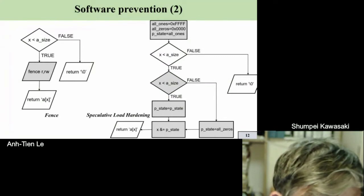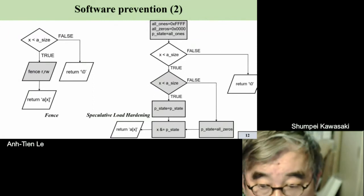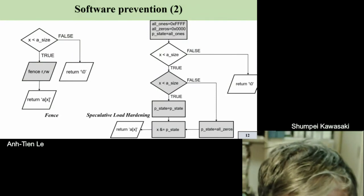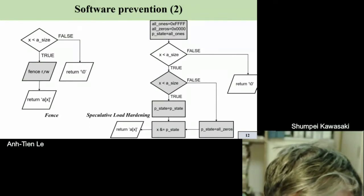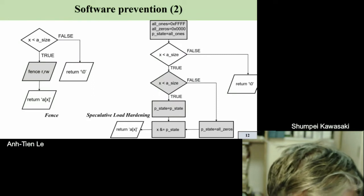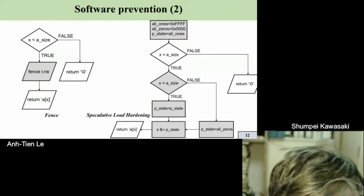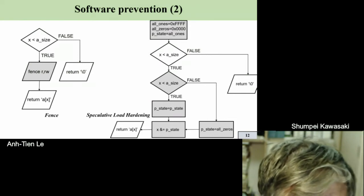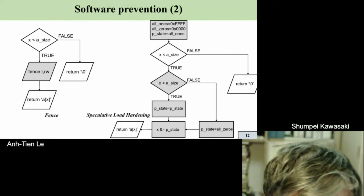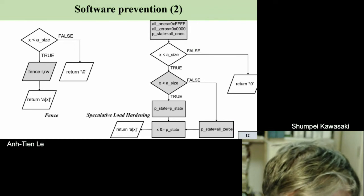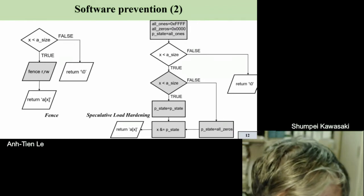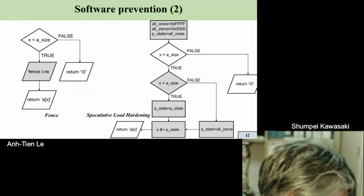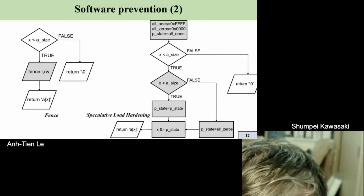In RISC-V, there is an instruction called FENCE. In a normal out-of-order processor like BOOM, they try to use speculative execution to run the program faster. The FENCE instruction forces the program to run in order, so that out-of-order execution does not happen. Because out-of-order execution is prevented, the Spectre attack cannot exploit it. However, this results in high performance overhead.